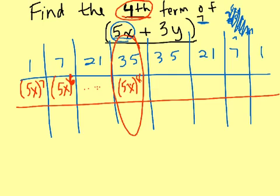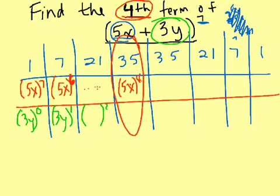Then finally, I have the second term, positive 3y to the power of 0. Then it's going to be to the power of 1, then to the power of 2. So this is what's important, is 3y to the power of 3.